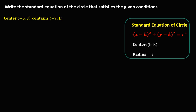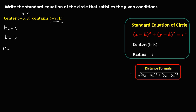For this given, the center is negative 5 and 3, so h is negative 5 and k is positive 3. Since the circle contains the point negative 7 and 1, we use the distance formula to solve for the length of the radius. x sub 1 and y sub 1 is the center, x sub 2 and y sub 2 is the given point.